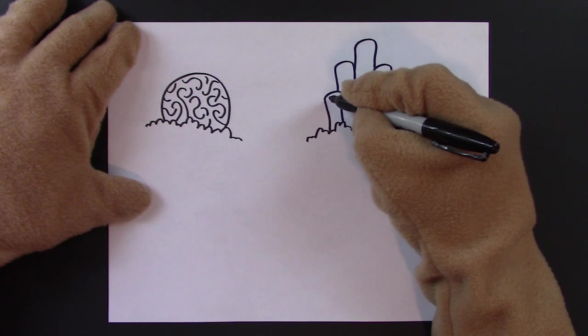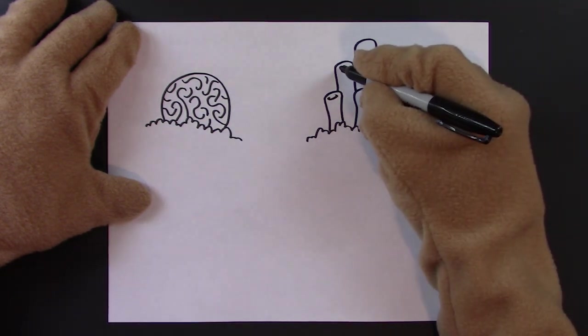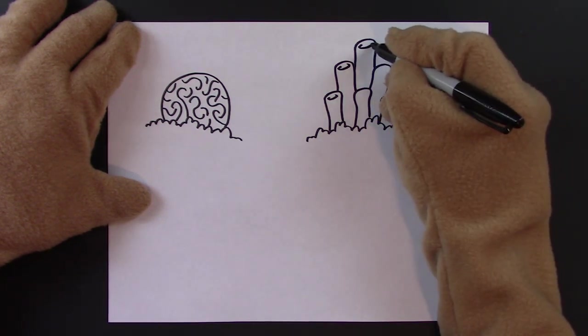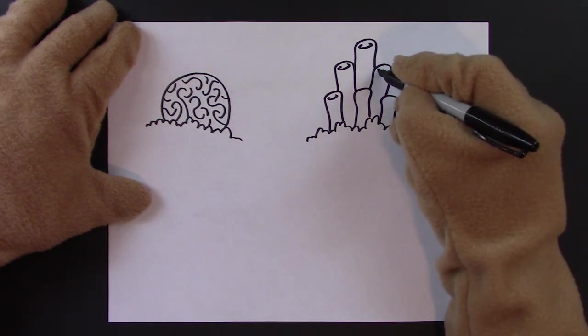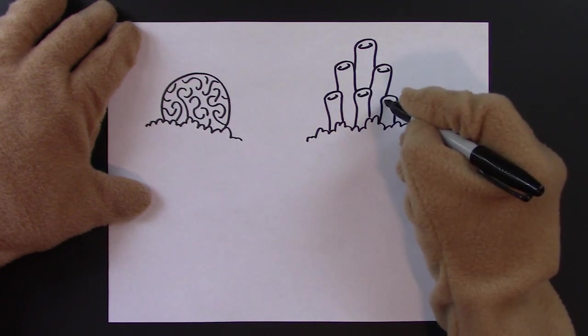Next, we'll make a little C shape at the top, like that. Sort of like a capital C lying on its back. We'll do that for each coral. Look at that.